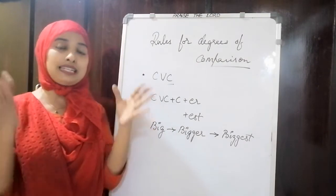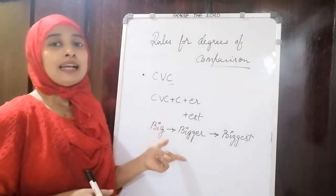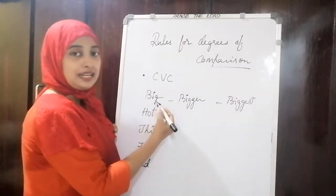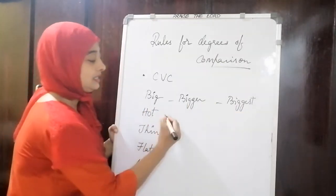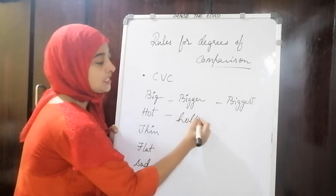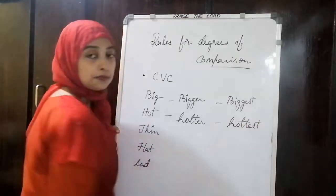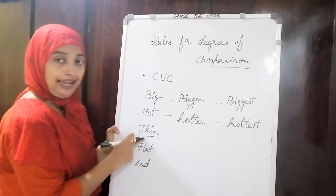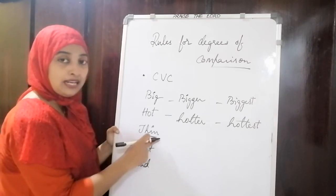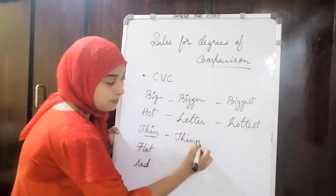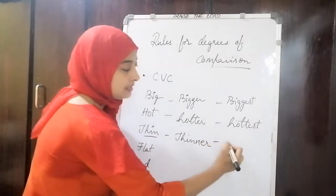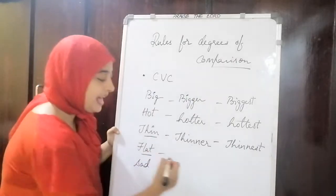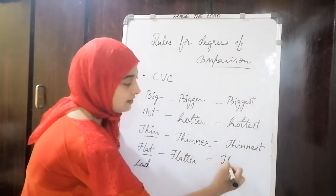When a word ends with CVC or is itself a CVC, follow this rule. For example: 'big', 'bigger', 'biggest'; 'hot', 'hotter', 'hottest'. 'Thin' ends in H-I-N — consonant, vowel, consonant — so add one more N and then ER or EST: 'thinner', 'thinnest'. Similarly, 'flat' becomes 'flatter' and 'flattest'.